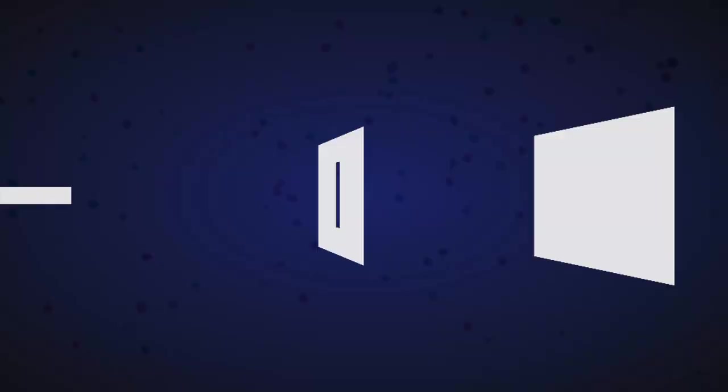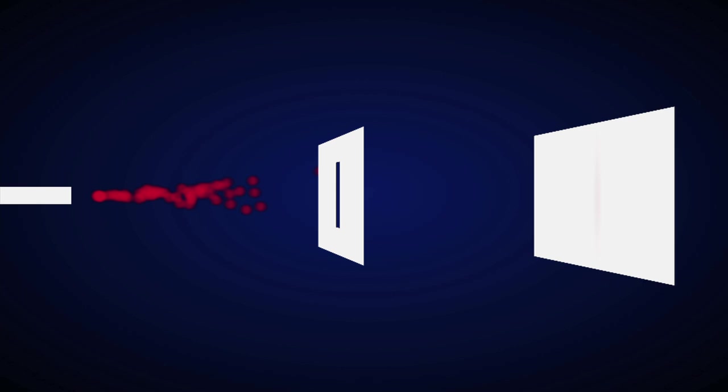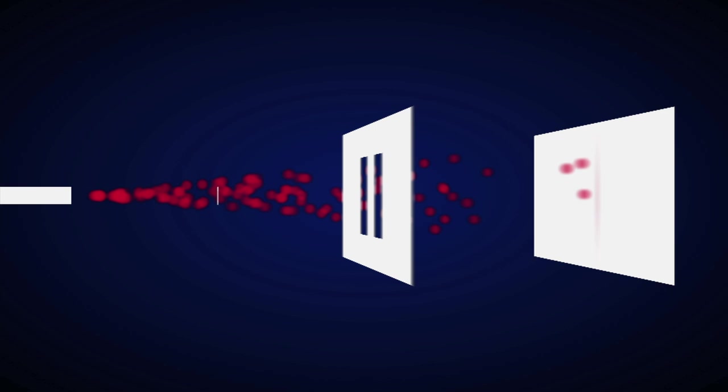The famous double slit experiment reveals how odd the rules of quantum mechanics are. Physicists were interested if particles acted like waves or little balls of matter. Using a single slit and double slit experiment we can determine how they behave. For comparison, when balls are shot through a single slit, they would create a single band on the other side where they land, and when they are shot through a double slit, they would reveal two bands on the other side. However, when a wave goes through a single slit, it would reveal a wave-like pattern with intensity in the middle. And when several waves go through a double slit, they interfere with each other, creating an interference pattern.